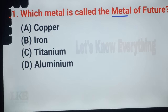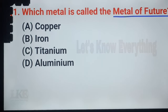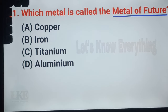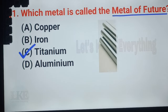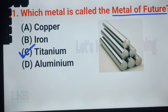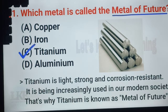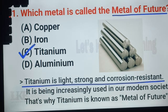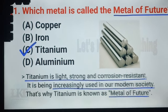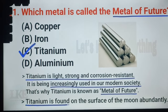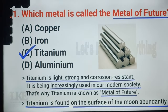Question number 20: which is called the metal of the future? A. Copper, B. Iron, C. Titanium, D. Aluminium. Can you guess the right answer? The right answer is option C, Titanium. Titanium is called the metal of the future because titanium is light, strong, and corrosion resistant. It is being increasingly used in modern society. Titanium is also found on the surface of the moon abundantly.